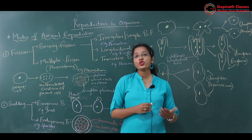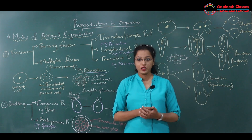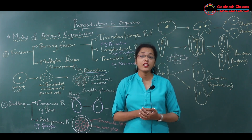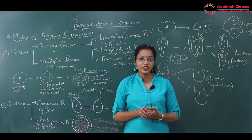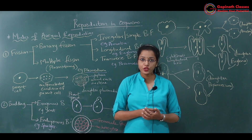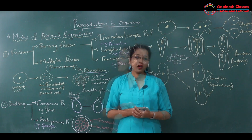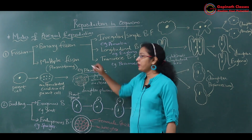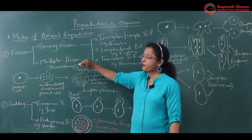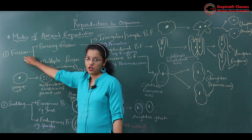There are different modes of asexual reproduction such as fragmentation, sporulation, binary fission, multiple fission, and budding. Today we will be learning firstly about fission.